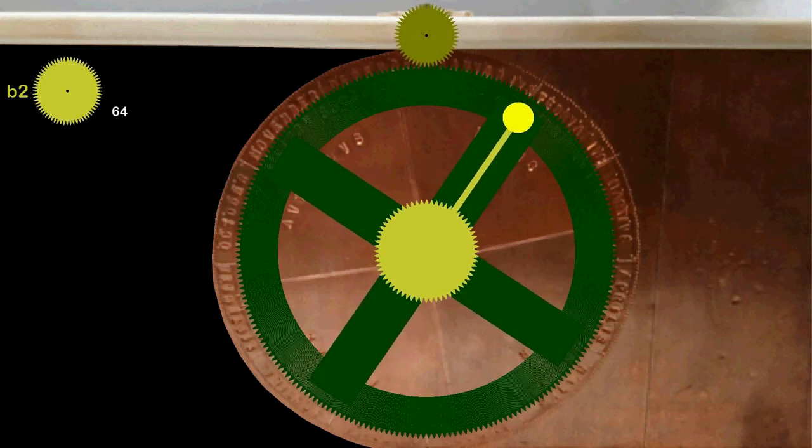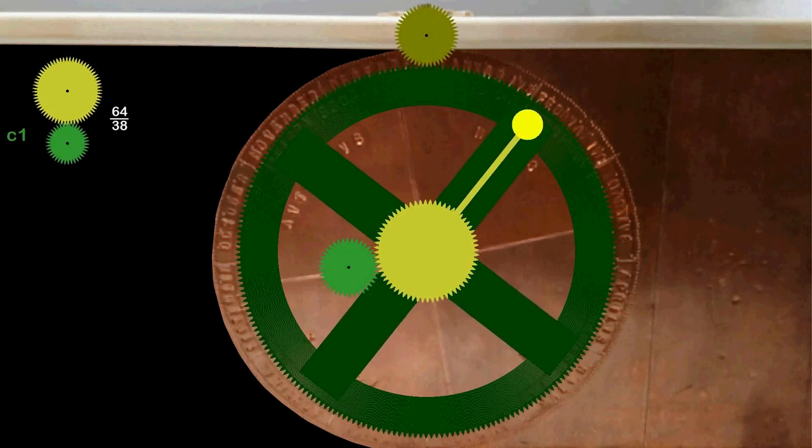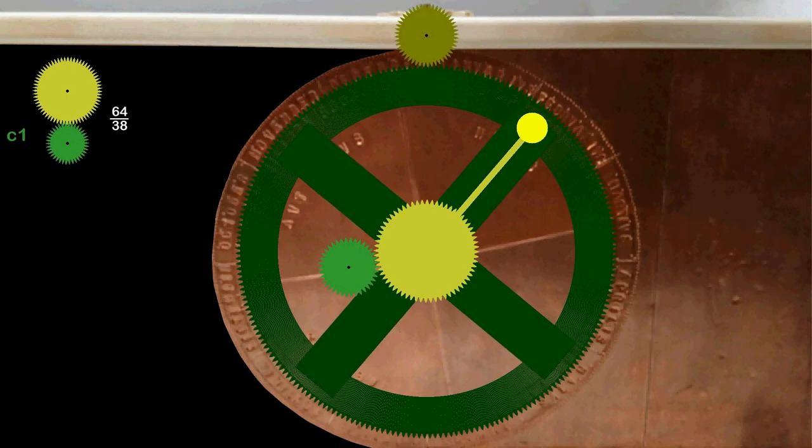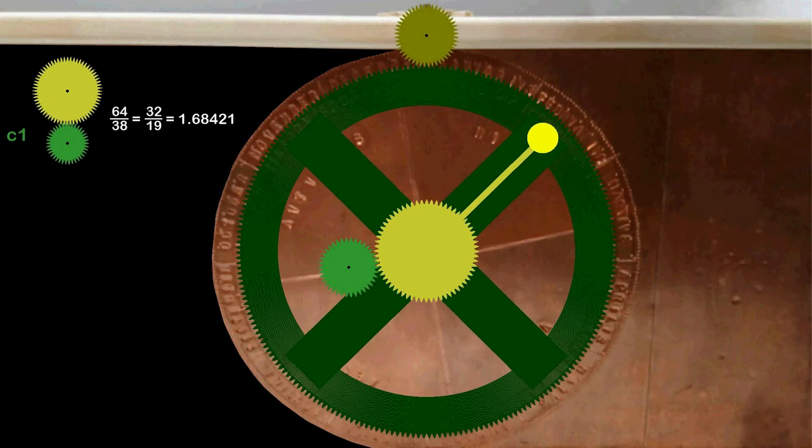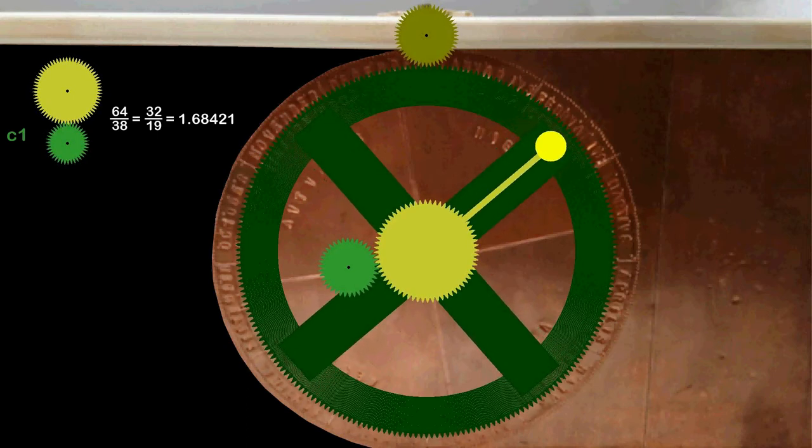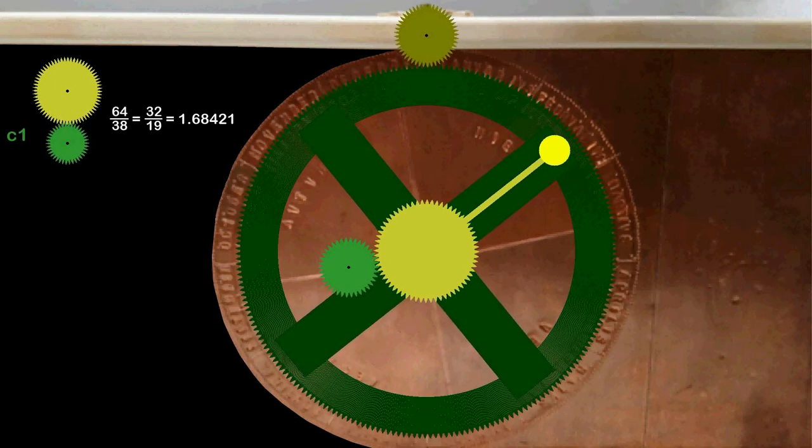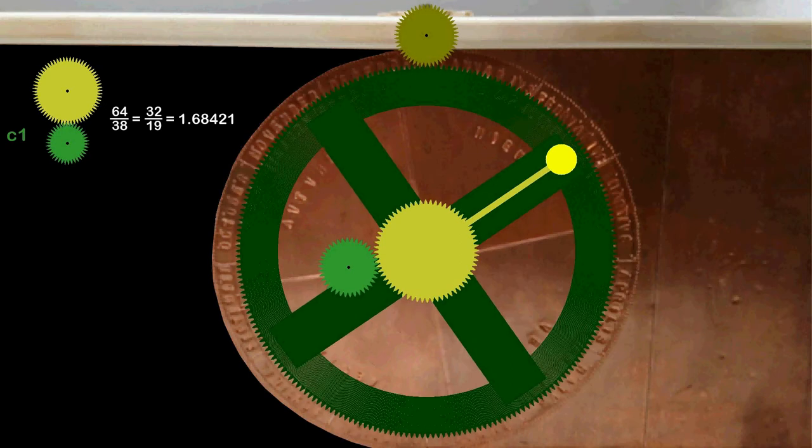The gear wheel B2 has 64 teeth. It meshes with the adjacent gear C1 which has 38 teeth. 64 divided by 38 is the same as 32 divided by 19 and that equals to 1.68421. Therefore C1 turns more than 1.5 times faster than B2.